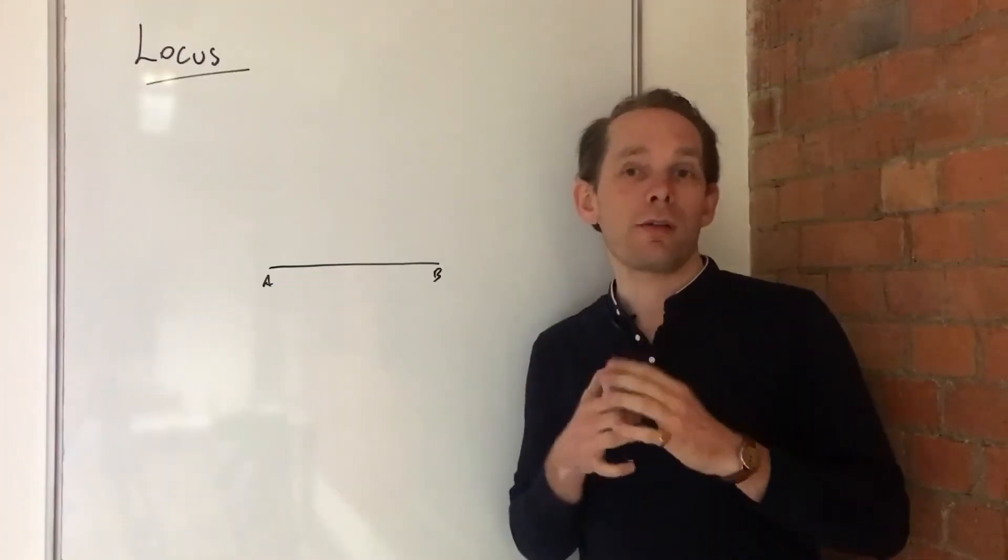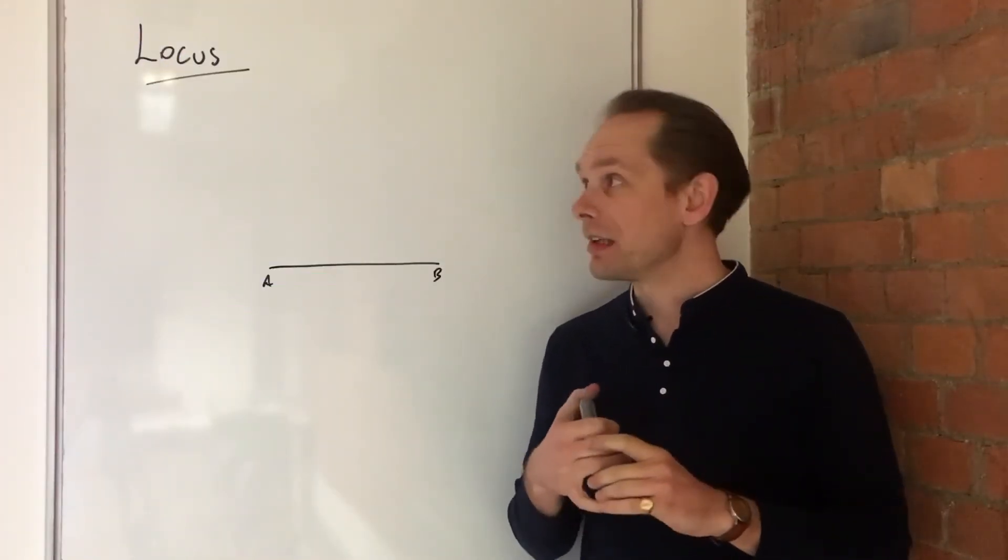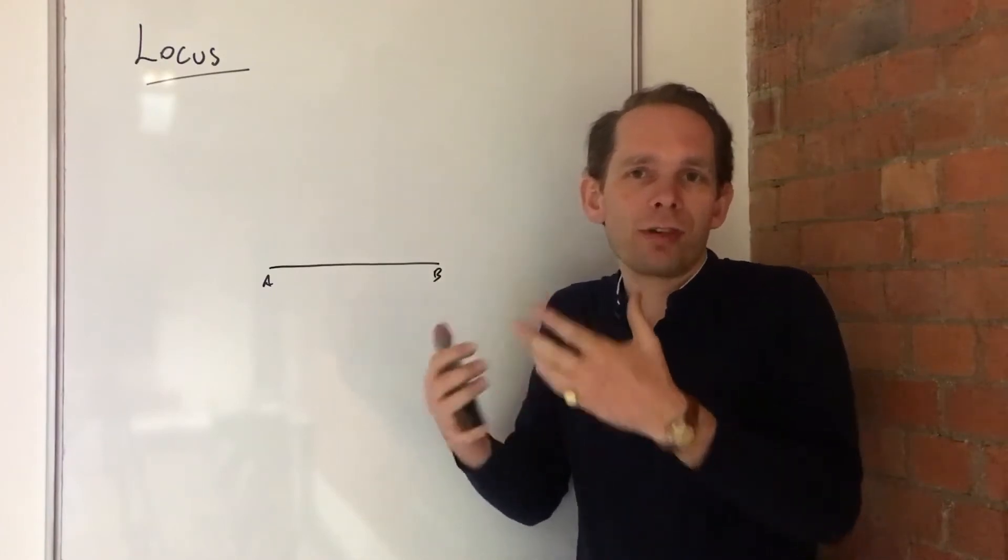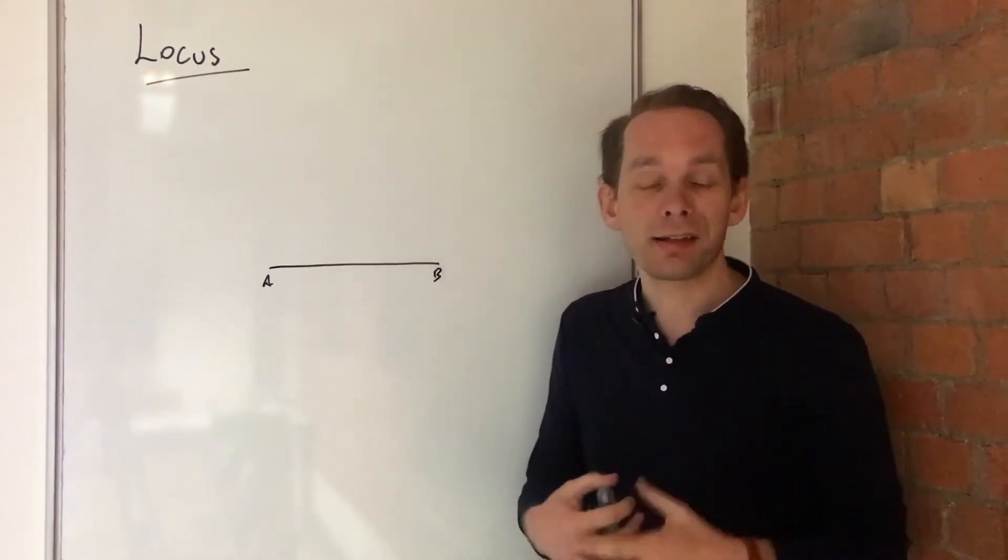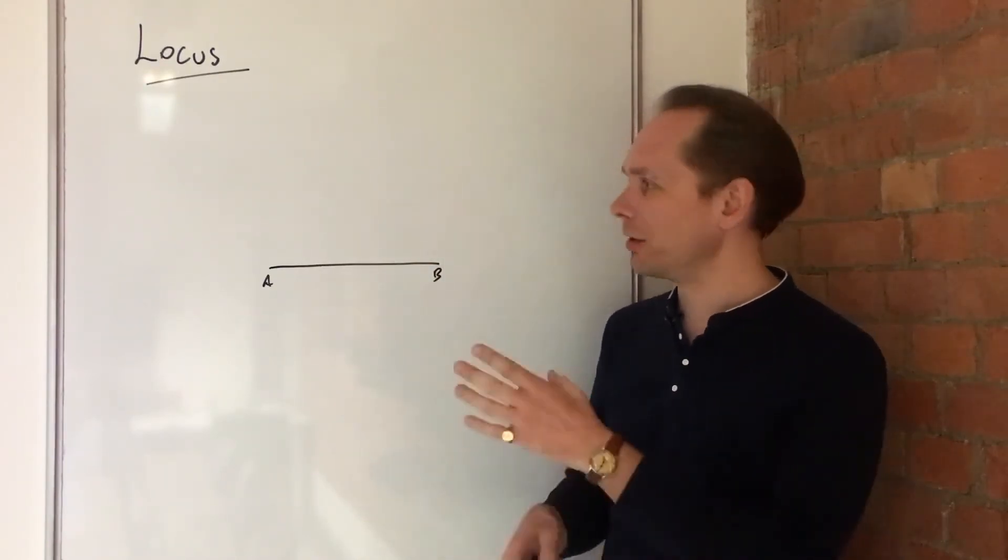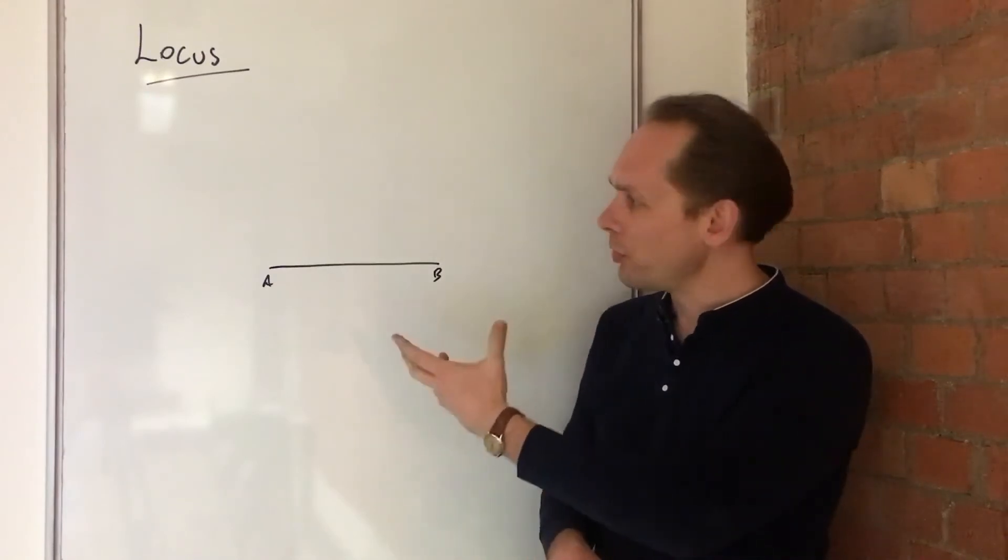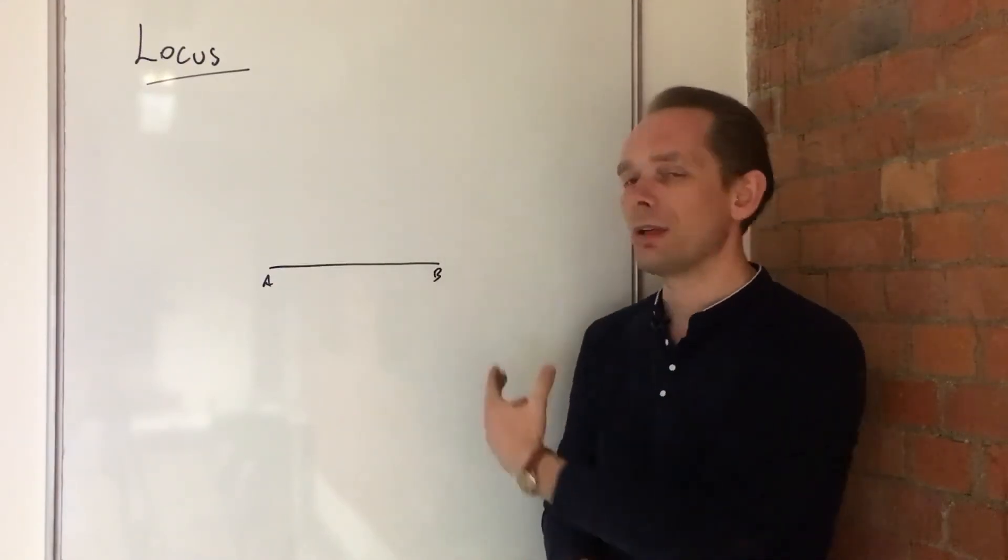Hello, this is one of our series of videos about locus, that is regions or areas that you draw by a set of rules. In this case, we're going to look at the rule of points that are three meters away from a line.